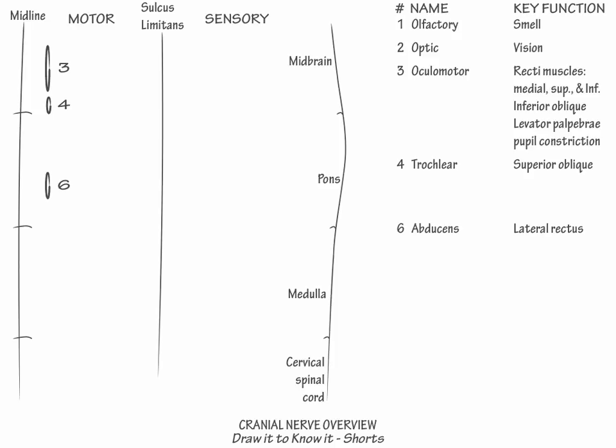Now, spanning the height of the medulla, draw cranial nerve 12, the hypoglossal nerve, which provides tongue movement. Then in the cervical spinal cord, draw cranial nerve 11, the spinal accessory nerve, which provides head turn.